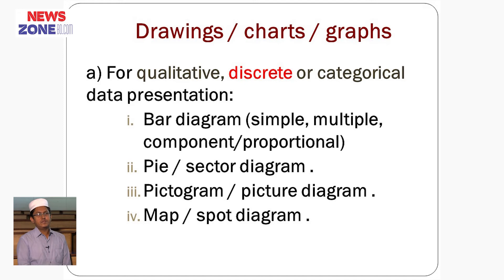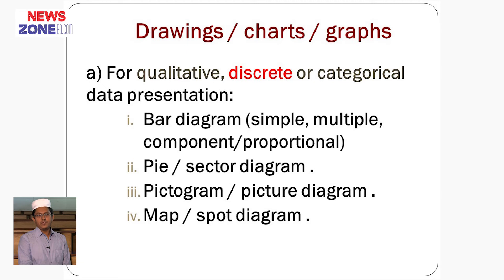Now let us discuss about drawings or charts or graphs. For qualitative, discrete, or categorical data presentation, we have four types of drawings. These are bar diagram, pi diagram, pictogram, and map diagram. In case of bar diagram, there are simple bar, multiple bar, and component bar or proportional bar diagrams.